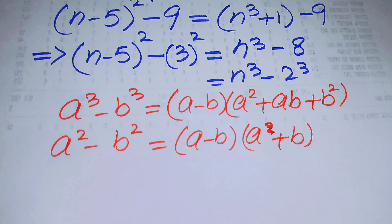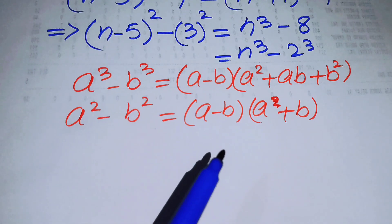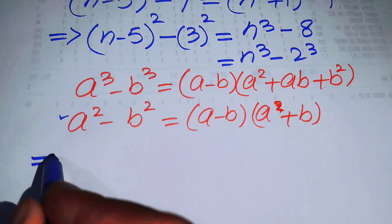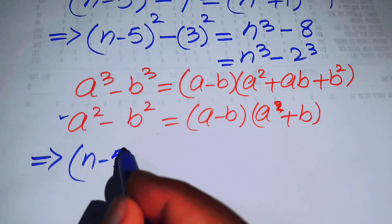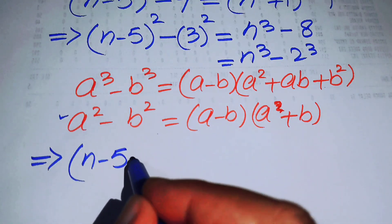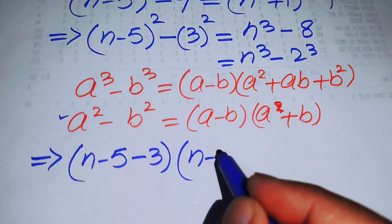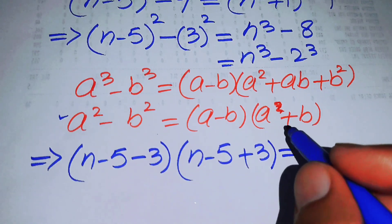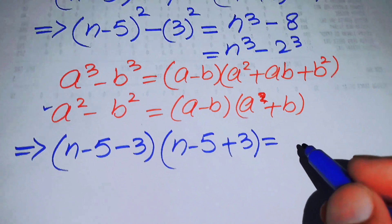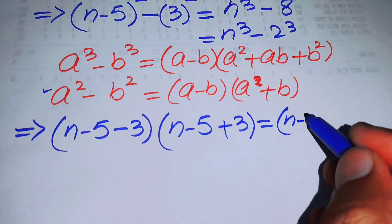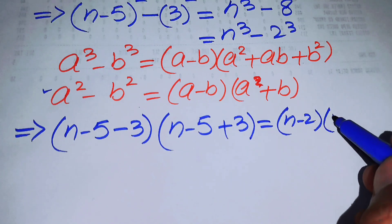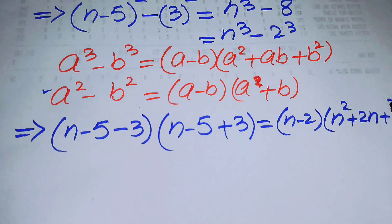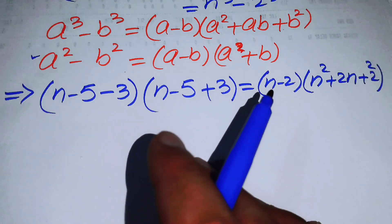Applying the difference of squares to the left-hand side gives (n - 5 - 3)(n - 5 + 3). Applying the difference of cubes to the right-hand side gives (n - 2)(n² + 2n + 2²).